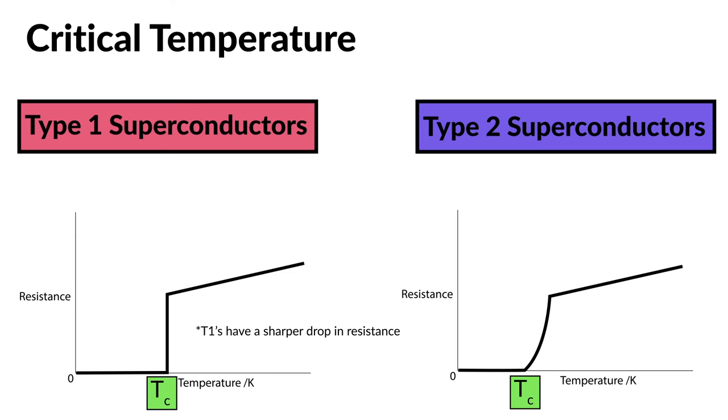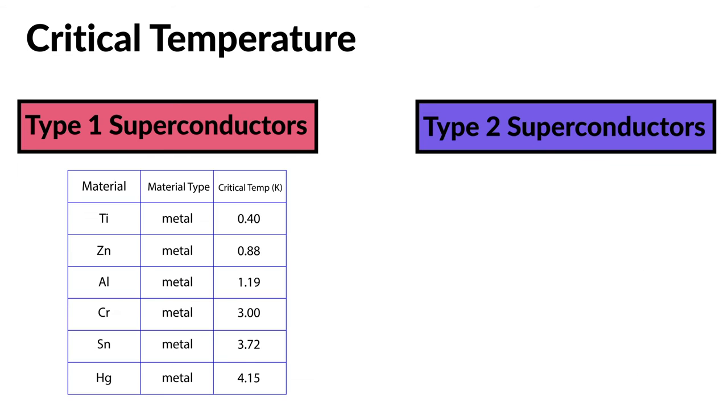The critical temperature of type 1 superconductors are listed here. Type 1 superconductors are often made of metals and metalloids. Notice that these temperatures are very near to absolute zero, and thus expensive cooling systems involving liquid helium are required to keep them functioning.